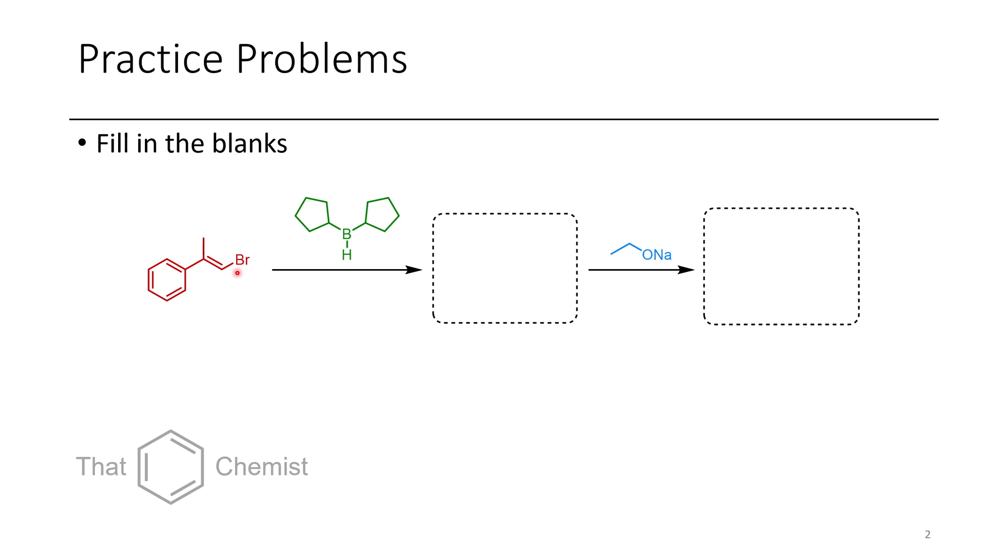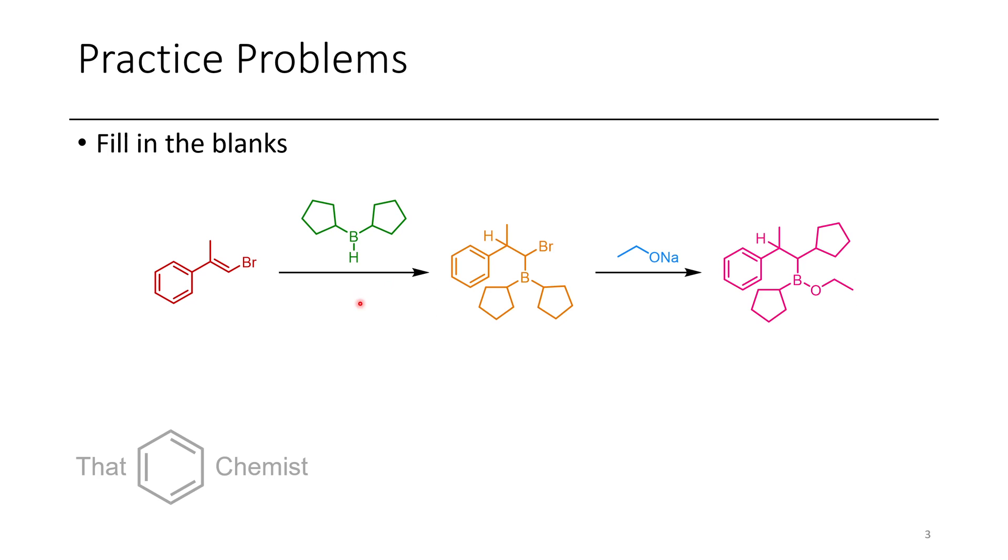So in this first problem we have a vinyl bromide and initially this is treated with a borane. So what occurs is a hydroboration reaction and then this is well set up for a reaction where sodium ethoxide can attack the boron and this allows one of the R groups to shift and displace the bromide, giving us this new carbon-carbon bond. Now you can still do subsequent chemistry with this boron-containing motif but we're just going to leave it for here.